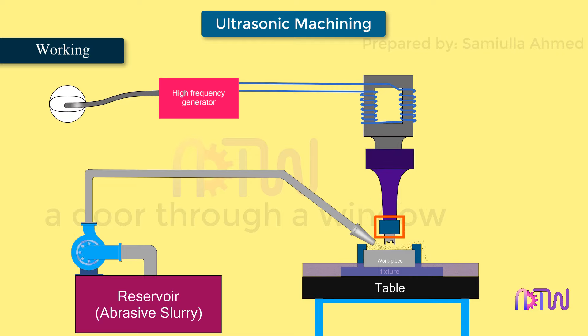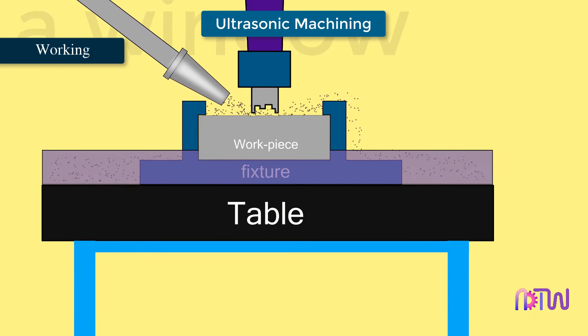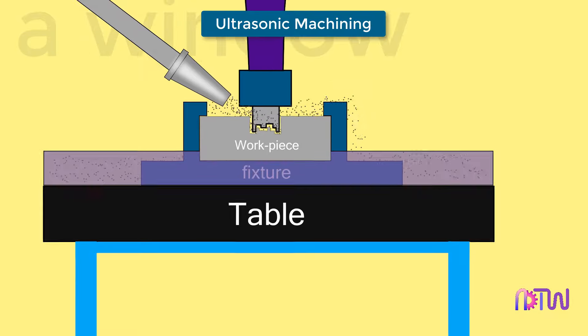The tool holder grips the tool as it vibrates. As the tool vibrates, the abrasive slurry is fed with the help of a pump at a constant rate between the tool and workpiece surface. Thus, as the tool vibrates, the abrasive particles impinge on the workpiece surface and due to abrasion, the material is removed.